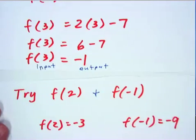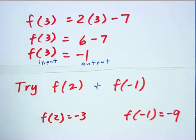Upon that substitution you should be able to figure out or solve that f of 2 equals negative 3 and f of negative 1 is negative 9. Again your input is 2, your output is negative 3, your input is negative 1 and your output is negative 9.